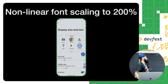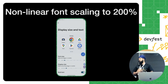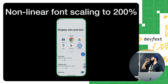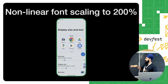The new feature is non-linear font scaling. Users can now scale the font up to 200%, which might break our applications if we're using dips instead of the scaling unit (sp) for font size in our XML files or Compose UIs. If you're targeting Android 14, you may need to make sure your app runs correctly when font size is changed from 100 to 200%.